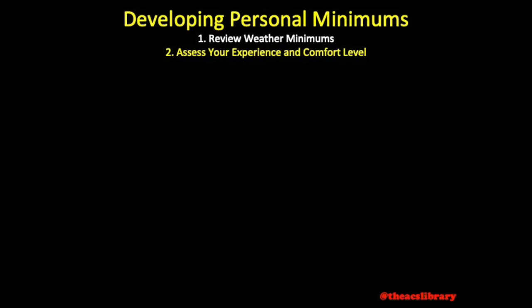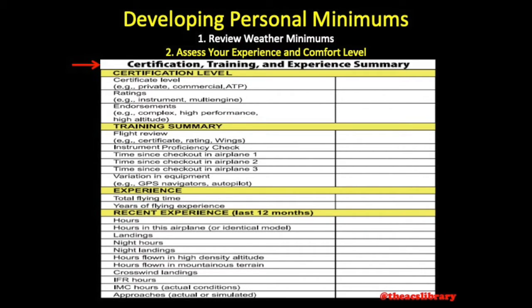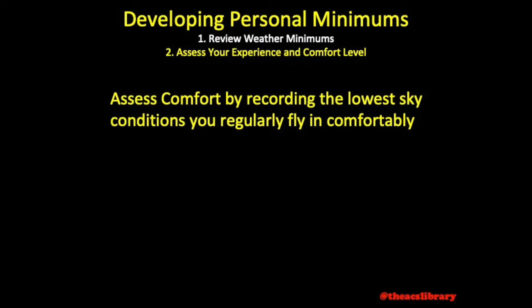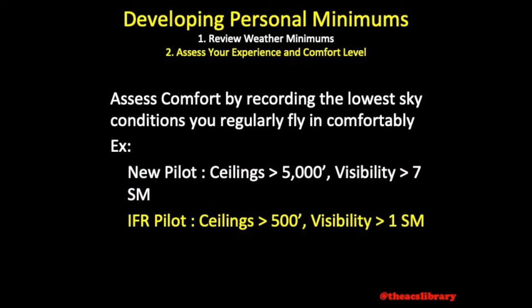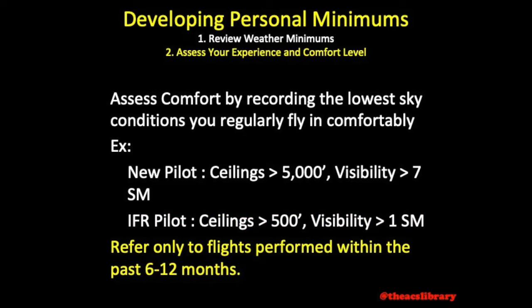Step 2: Assess your experience and comfort level. To assess experience, one could complete the certification, training, and experience summary provided by the FAA Safety Team. This involves considering things such as your certificates and ratings held, most recent flight reviews or aircraft checkouts, total time spent flying, and experience within the past 12 months. Next, assess comfort level by recording the lowest sky conditions you regularly fly in comfortably. For example, a brand new private pilot may feel comfortable with ceilings no less than 5,000 feet and 7 statute miles visibility, while a more seasoned pilot with an IFR rating may feel right at home performing the approach and landing to an airport reporting ceilings of just 500 feet and 1 statute mile visibility. The FAA recommends referring to flights only within the last 6 to 12 months when making these assessments. Remember, this is all based on personal comfort level.